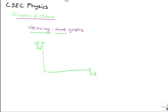Alright, so here's the example — you may want to pause the video, write it down, and follow along. Starting from 0, an object's velocity increases to 10 meters per second in 5 seconds, remains at this value for 10 seconds, then decreases to 0 in 2 seconds. Draw the velocity versus time graph, calculate the acceleration of the object for each step on the journey, and calculate the total displacement of the object.